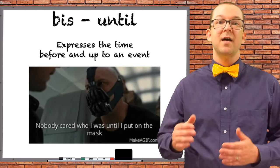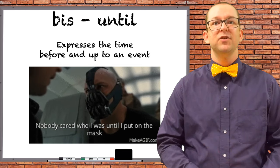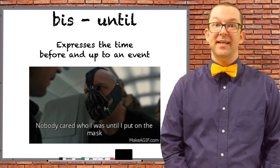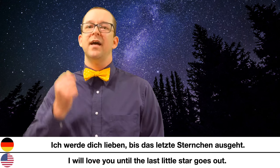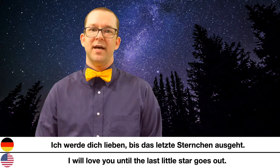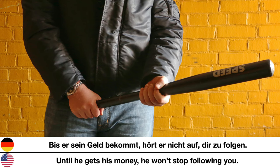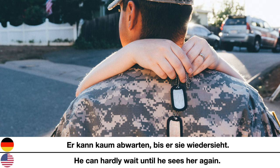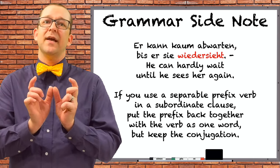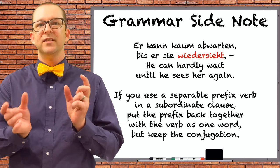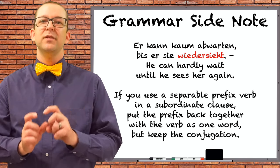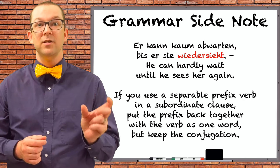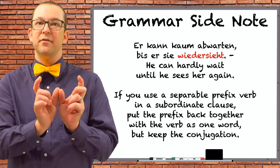While bevor and ehe talk about the time before something occurs, the conjunction bis expresses the time leading up to the occurrence, translating as 'until.' Examples: 'Ich werde dich lieben, bis das letzte Sternchen ausgeht.' — I will love you until the last star goes out. 'Bis er sein Geld bekommt, hört er nicht auf dir zu folgen.' — Until he gets his money, he will not stop following you. 'Er kann kaum abwarten, bis er sie wieder sieht.' — He can hardly wait until he sees her again. Note that wieder and sehen come together at the end of the clause as 'wieder sieht,' still conjugated.